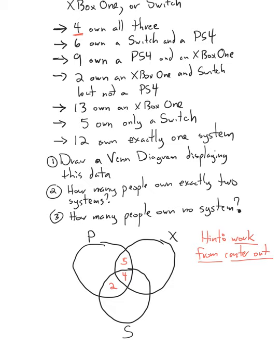Two people own an Xbox One and a Switch, but not a PlayStation 4. So where is that area in our Venn diagram? That's going to be this segment here — the area that is in the X circle and the S circle but not the P circle. So they own an Xbox One and a Switch but not a PlayStation 4, and we know there are two people in there.